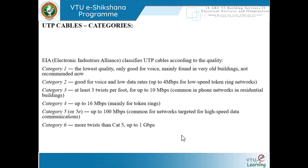Category 5 or 5e, which we mostly use even today in offices and institutional buildings, supports up to 100 Mbps. High-end offices and IT companies are using Category 6 or above — it has more twists than Cat 5 cables and can handle capacity up to 1 Gbps. With this we have covered Module 5, Sub-heading 1.